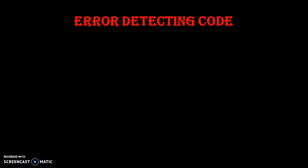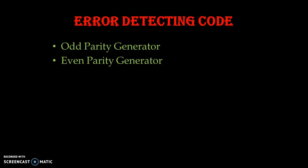In error detection code, based on the parity bit we can decide whether there is an error or not, and that is known as detection. In error detection we have two different types of parity generator: one is odd parity generator and another one is even parity generator. Let us study first the odd parity generator.